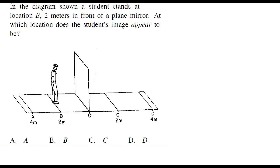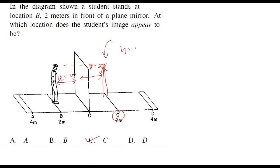The next problem: the object is standing at a distance of 2 meters, so object distance is 2 meters. The image distance from the plane mirror would be the same — 2 meters. The image is of the same height, and 2 meters corresponds to point C as the correct answer. This part is called the virtual world because it does not exist in reality. If you try to catch your image inside the mirror, there is nothing like an image inside the mirror.